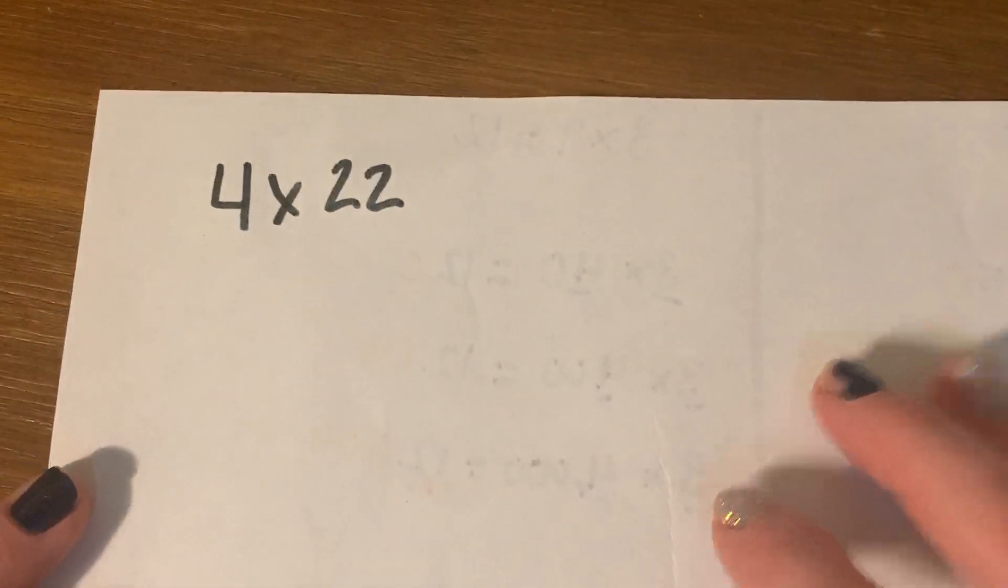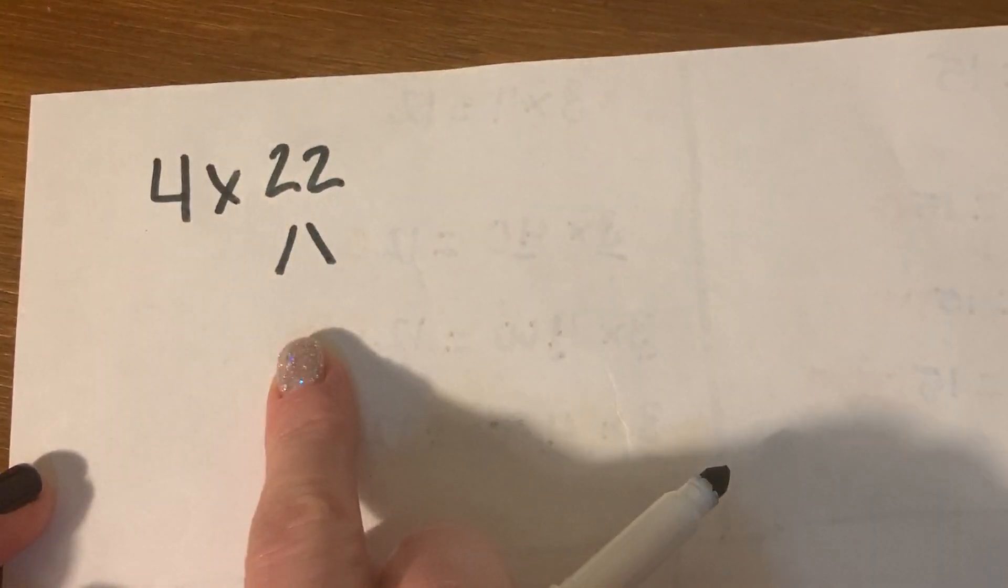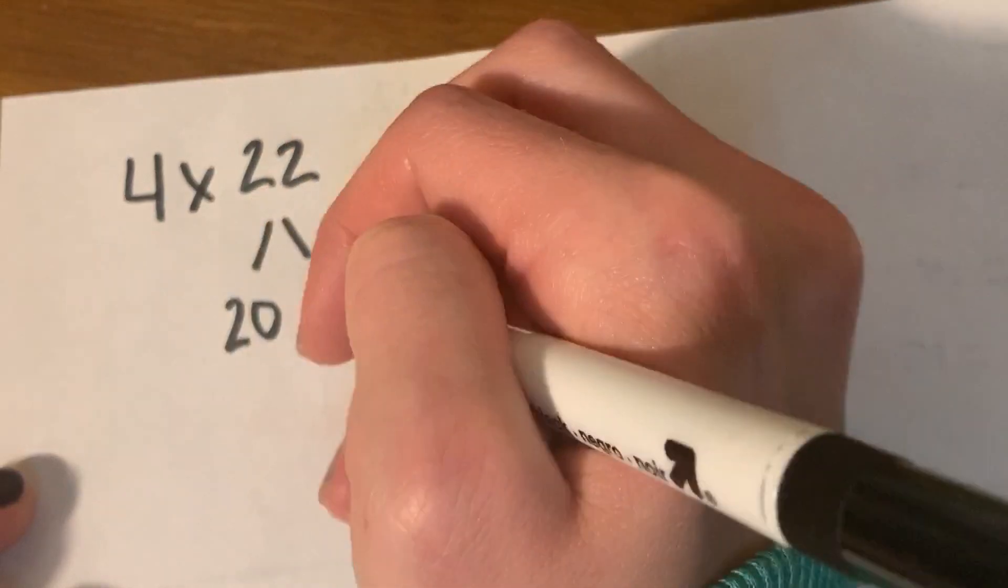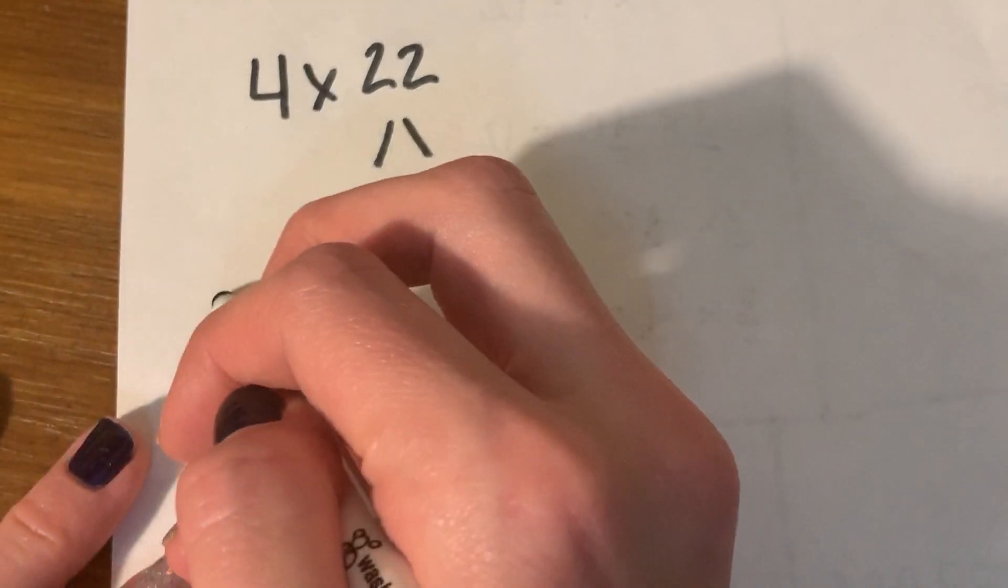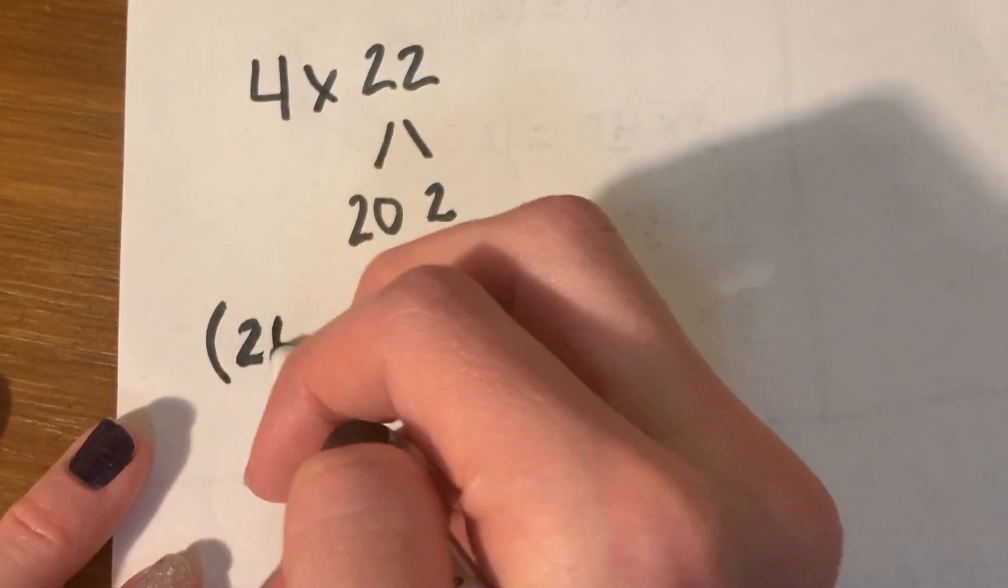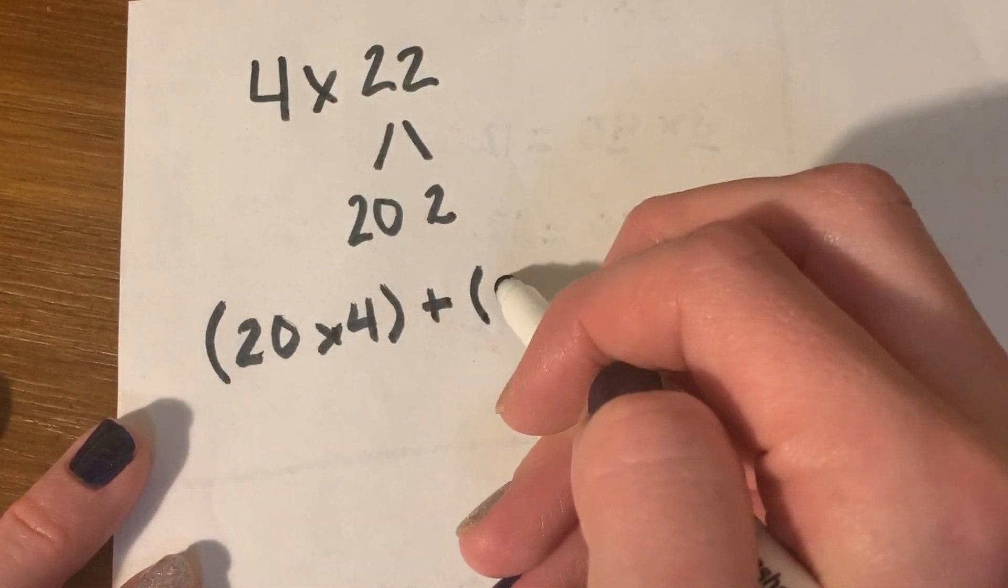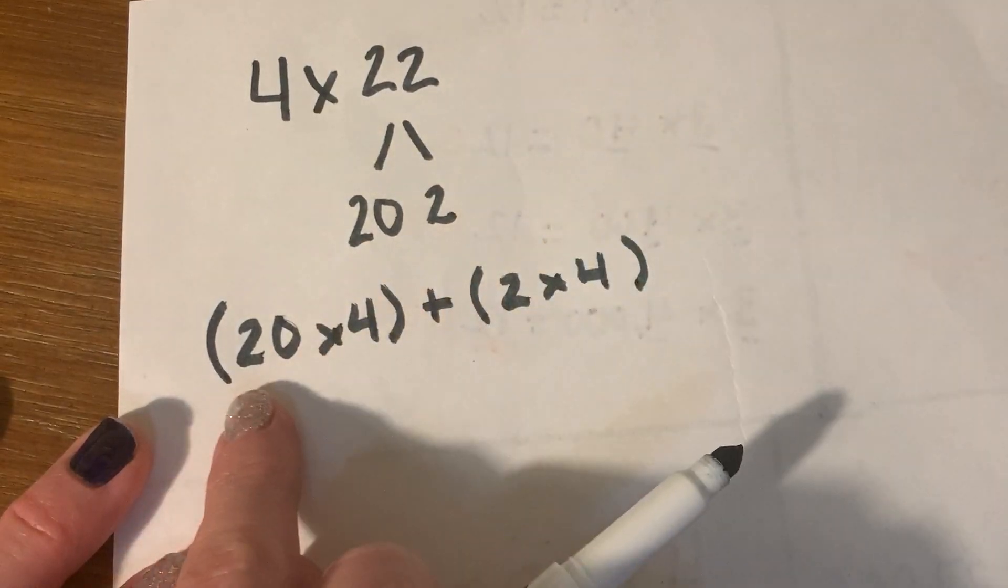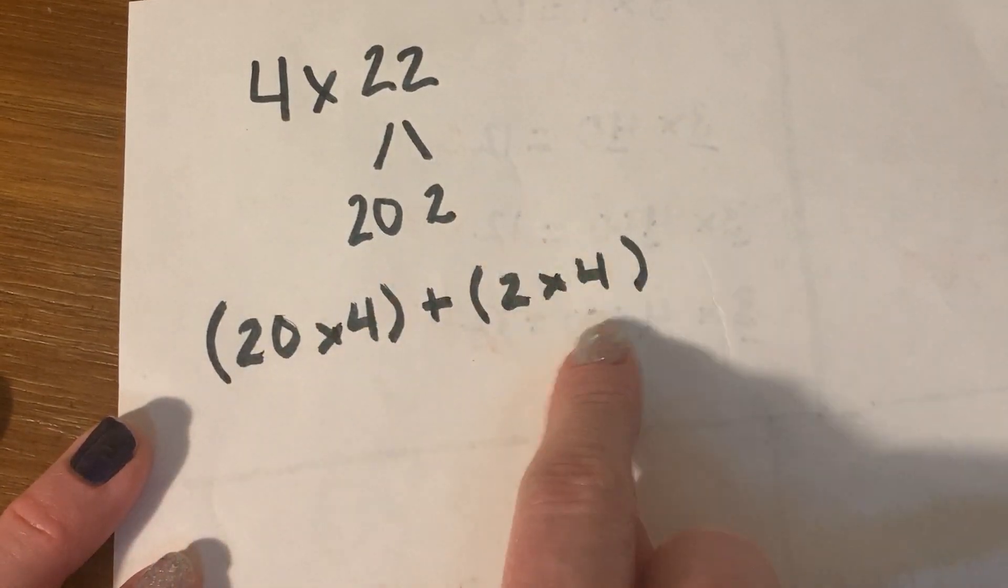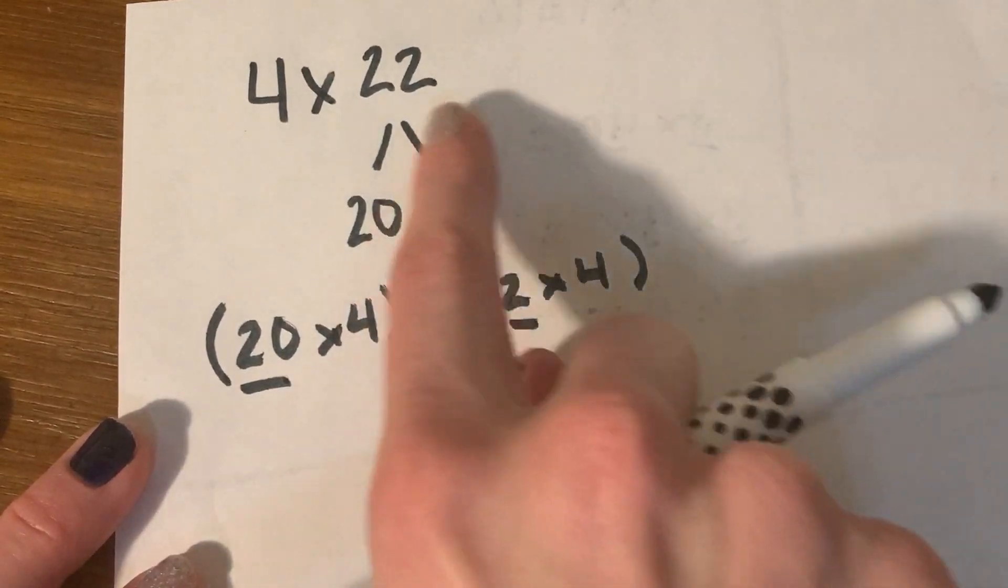So I want to start out with the problem, let's do 4 times 22. So what I'm going to do first is I'm going to break this into partial products. I have 20 and I have 2. So I'm going to go ahead and write it like this. I have 20 times 4 plus 2 times 4. I still have 22 groups. 22, 22 times 4.